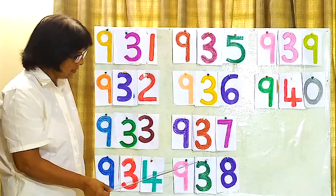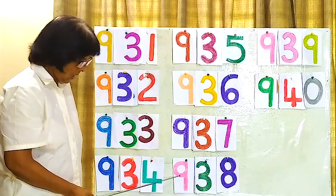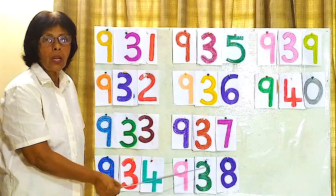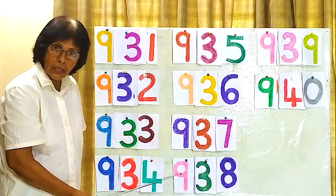935, 935. This one, 938, 938. How do you read? This, 938, 938.